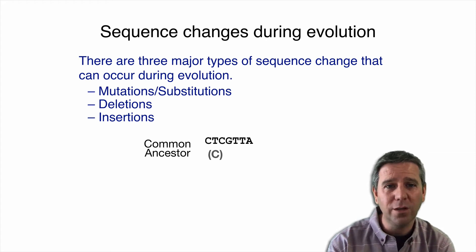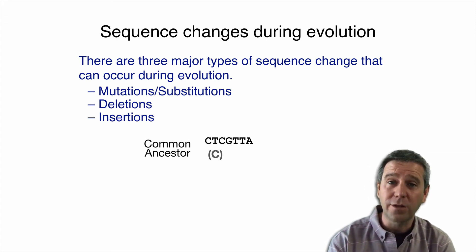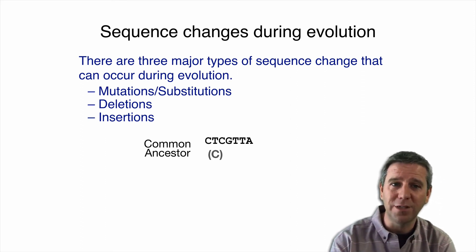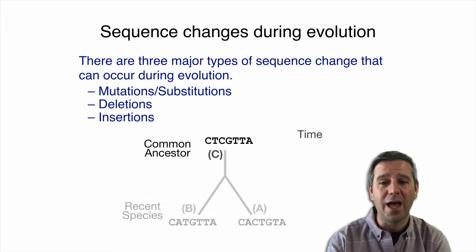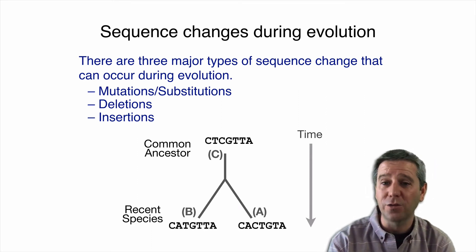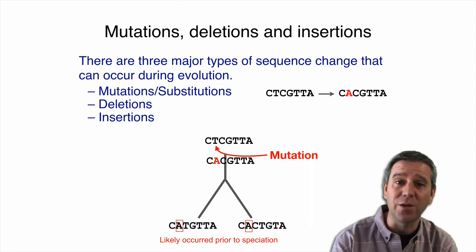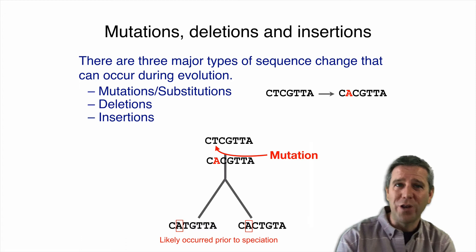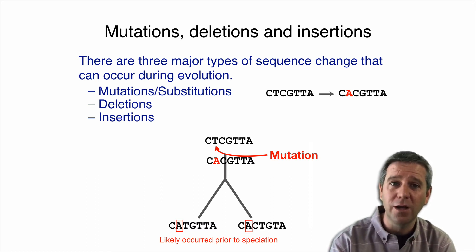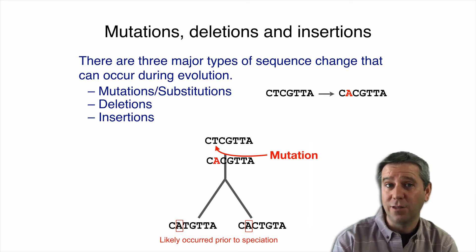If we go back to our example of two homologous sequences sharing a common ancestor — labeled C here — we have two modern sequences A and B descended from this common ancestor over time. We can envisage that a mutation event changed a T to an A at the second position in the ancestor sequence. We can postulate this happened prior to the speciation split, because the A is present in both descendant sequences A and B — so it probably happened before the split.